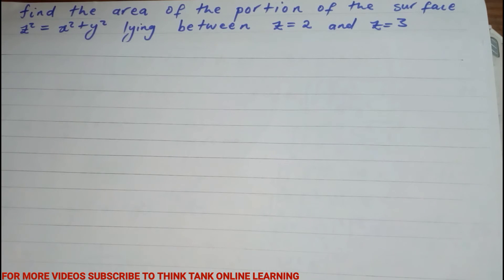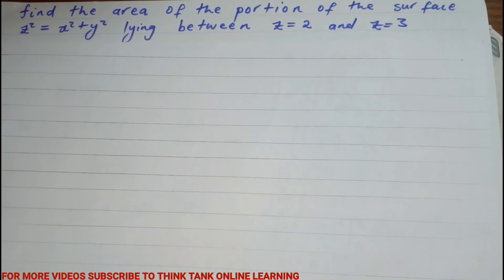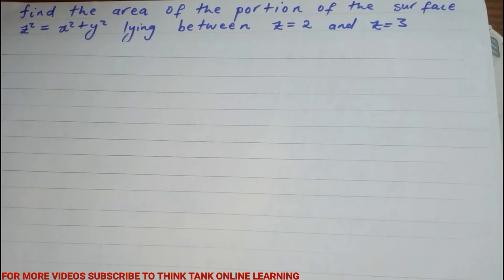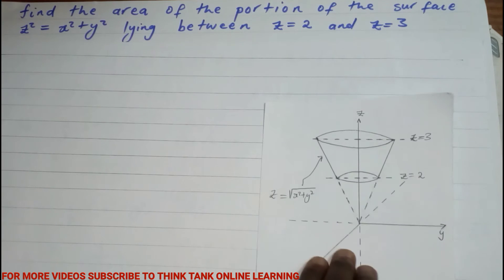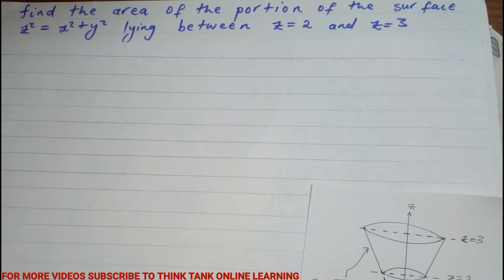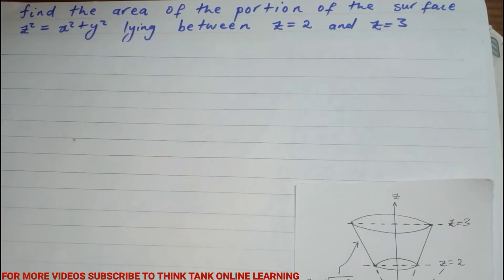Using the second method, we are still finding the area of surfaces in space. If you happened to see the first video, we solved this problem using the first method, and now we're solving it using a different method. In this method we're going to use parametric equations. Let's analyze what we're given — we have the equation of a cone. When using this method you don't need to worry too much about sketching; you mainly need to know the limits.